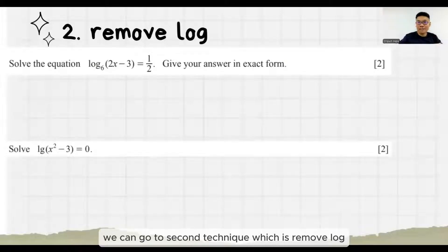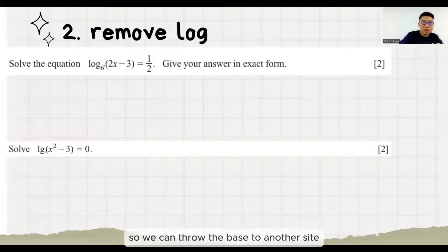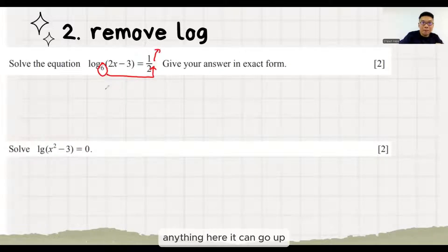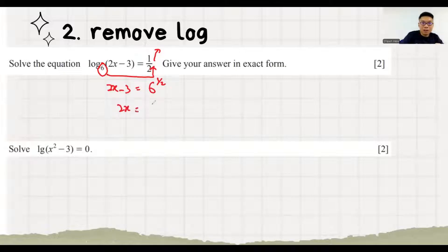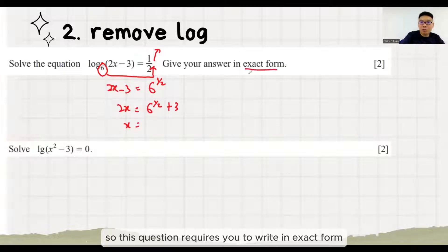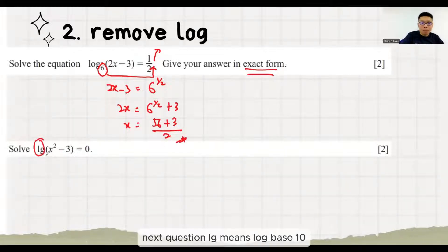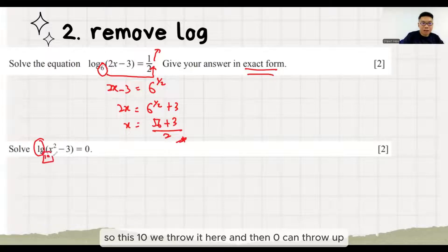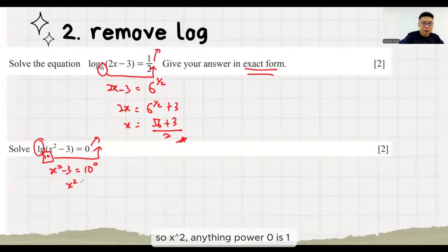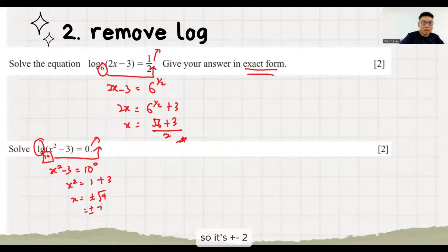Immediately, we can go to the second technique, which is remove log. Here we have log base 6. So we can throw the base to another side. Anything here can go up. This question requests you to write in exact form. Next question: LG means log base 10. So this 10 will go to the other side. And then 0 goes up. Anything to the power 0 is 1. So it's plus or minus 2.